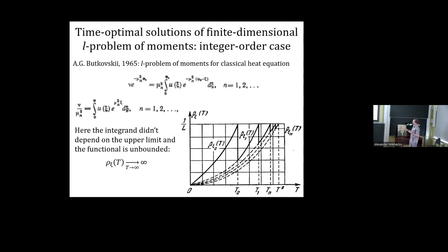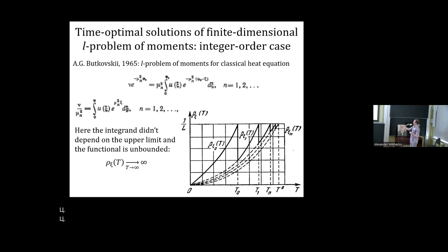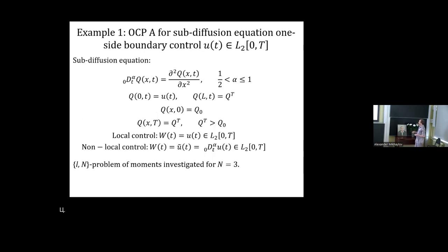For integer-order systems this is not true: the functional rho, which represents an area under a curve, grows with T, so at every level l we can find a solution satisfying the condition — this is the result of Butkovsky. In our fractional-order case, phi_0 is the analog of T, and we can see that the moments and functions g contain the same dependence on the right bound of the range. We can reduce to a problem where the integrand does not depend on the right bound.